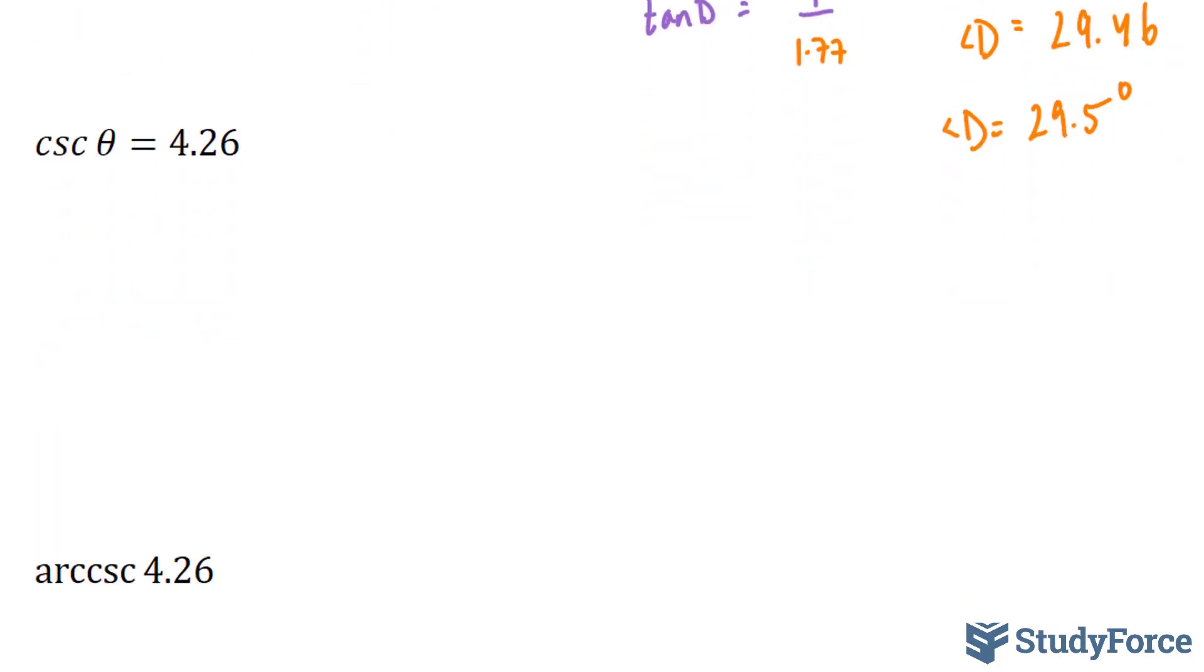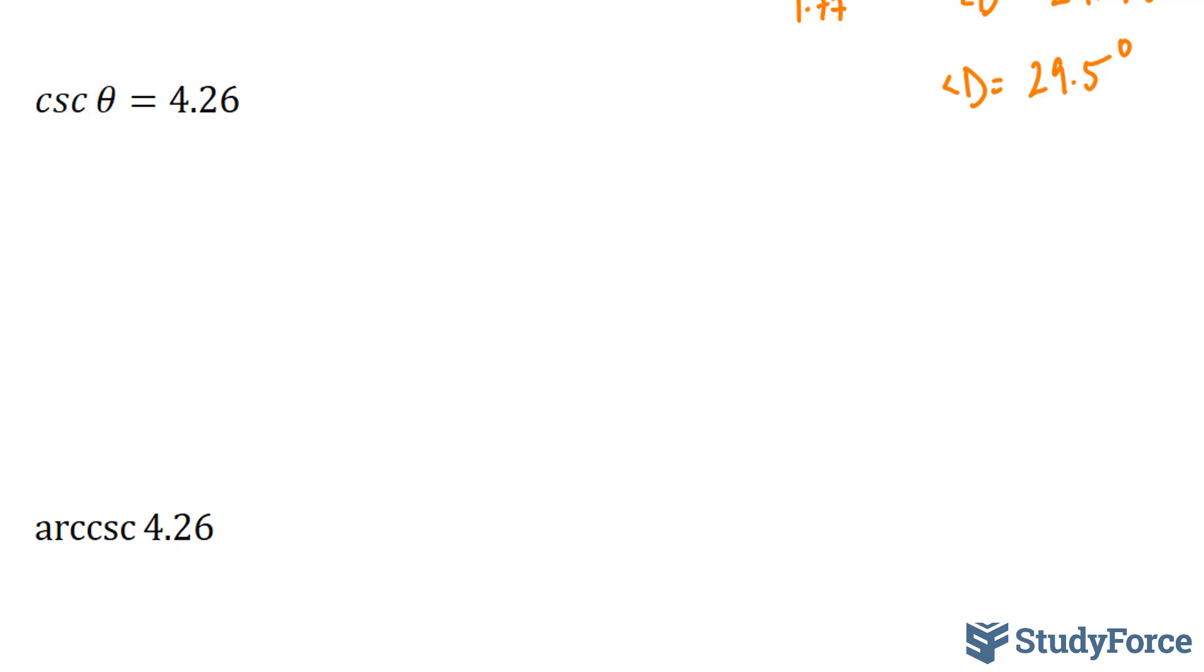Let's try another one. This time we have cosecant theta is equal to 4.26. Cosecant and sine are related. Sine theta is equal to 1 over cosecant theta. And of course, cosecant is equal to 4.26.